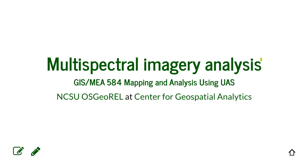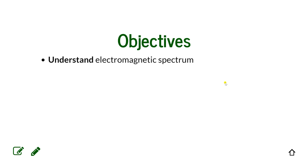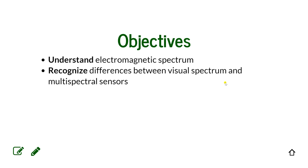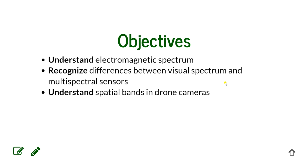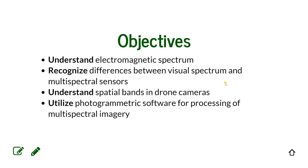Today we have our last lecture in the course. We're going to learn about multispectral imagery from drones. The objectives of this lecture are: first, to understand the electromagnetic spectrum; then to recognize differences between visual spectrum and multispectral sensors; and also to focus on spectral bands and what bands are available in drone cameras.